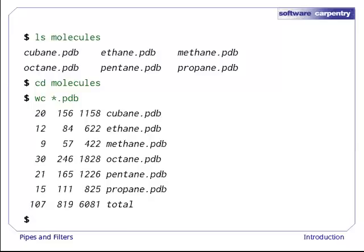Lines, words, characters, and the file name, one line per file, with a line for the total at the end.